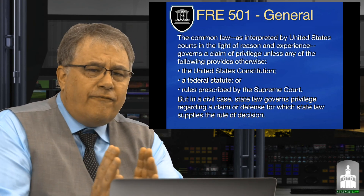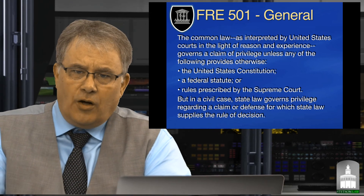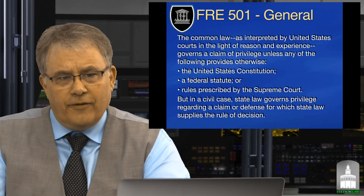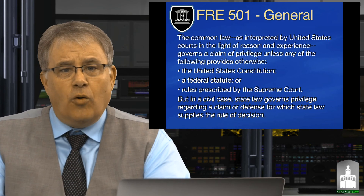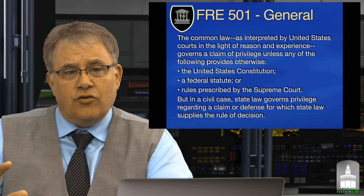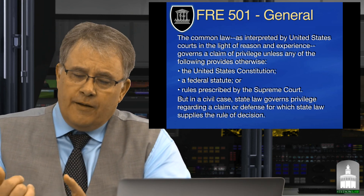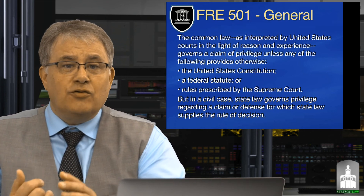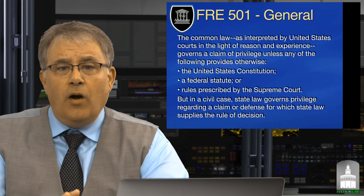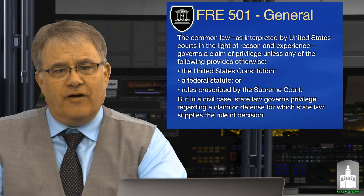If we go and look at Federal Rule of Evidence 501, it tells us that the common law of the United States governs claims of privilege in federal court, except for the United States Constitution — you should think Fifth Amendment privilege and self-incrimination — specific federal statutes designed to provide additional privileges, or rules prescribed by the Supreme Court, which would be the Federal Rules of Evidence.